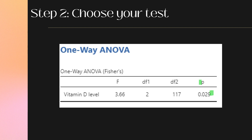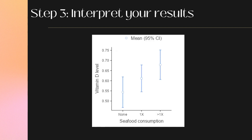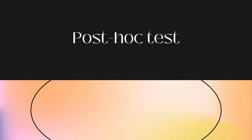And there is our p-value. Step 3: Interpret your results. My results indicate that there is a difference between my groups. But between what groups exactly? Therein lies the rub — we don't know between which groups the difference is happening unless we run an additional test called a post-hoc test.